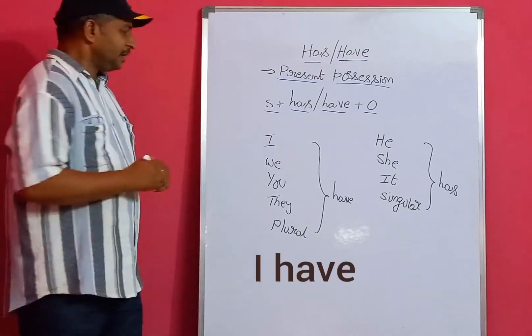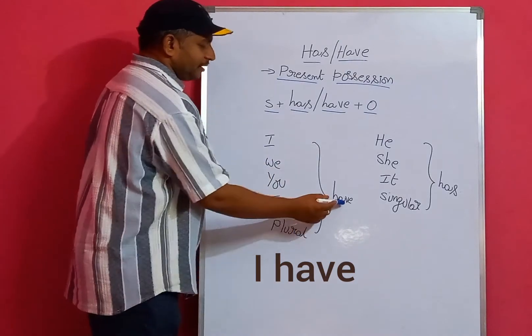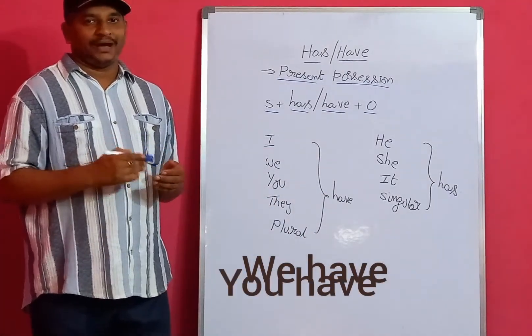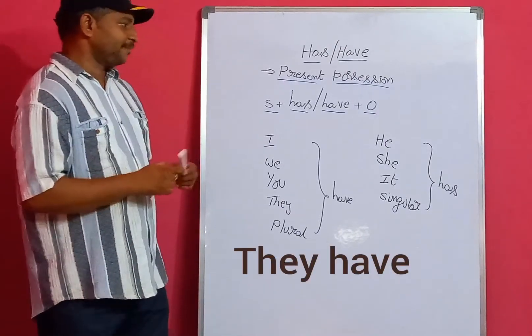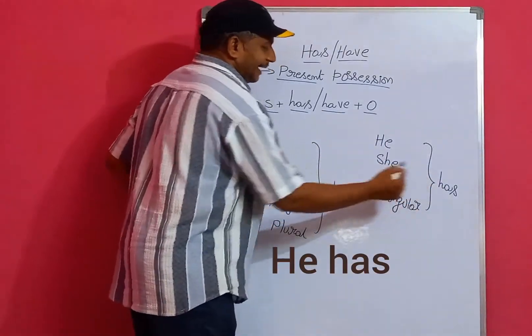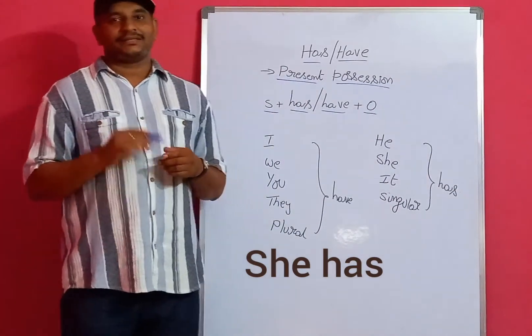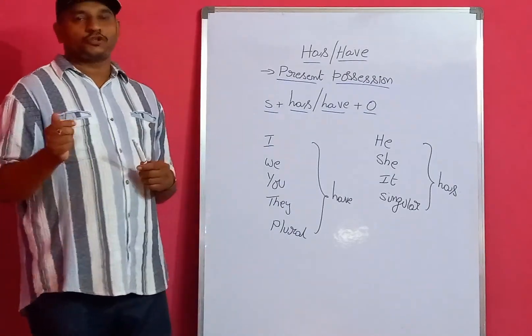So I have, we have, you have, they have, friends have, relatives have, all use have. He has, she has, it has - all singular subjects. Ramu has, Ravi has, Satya has. When forming sentences, follow these rules.